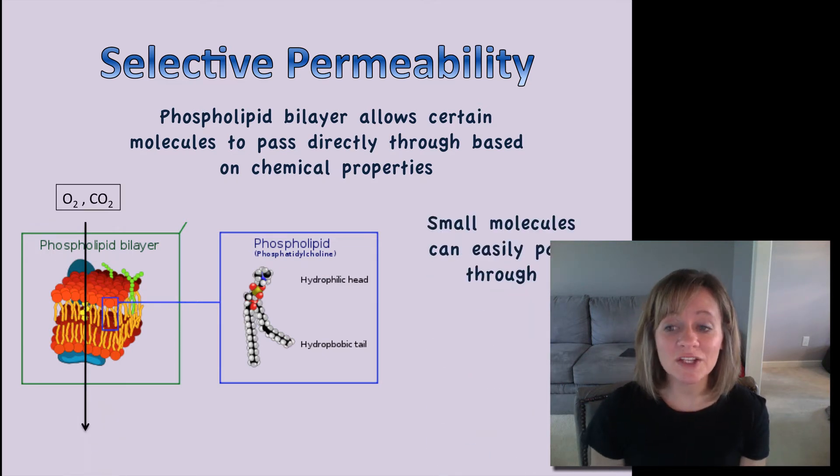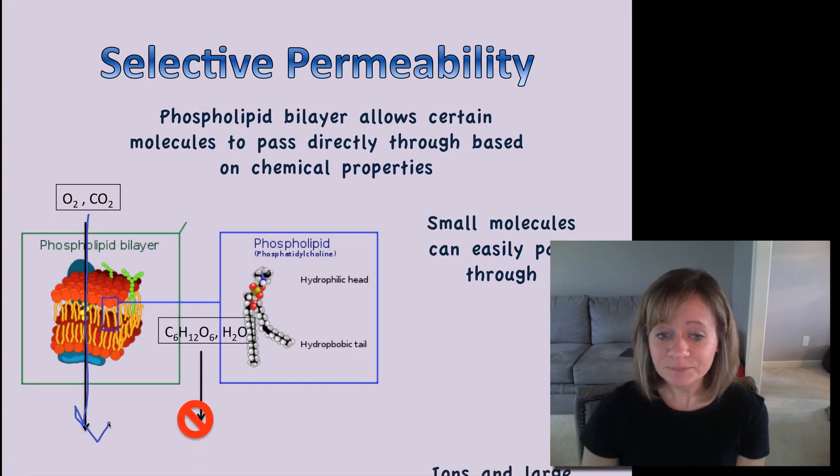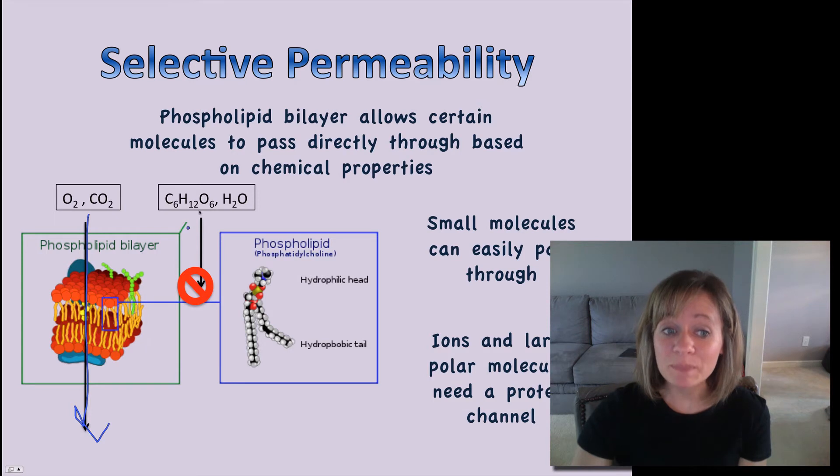So some things that can pass directly through are small molecules like oxygen gas and carbon dioxide. Because they're small, they can diffuse right across the phospholipid bilayer. Some things like big molecules or polar molecules like water, they need a protein channel. They cannot simply pass directly across the membrane. So we have to look at how that actually happens.